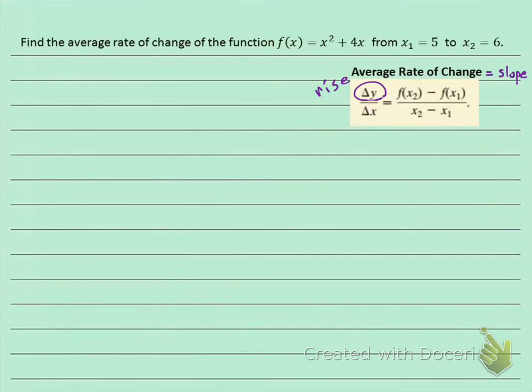So let's take all the numbers, plug them in here, and see what the average rate of change is. I know what x₁ is: x₁ = 5. I know what x₂ is: x₂ = 6. I need to find f(x₁) and f(x₂).